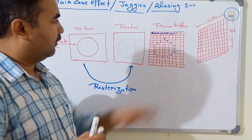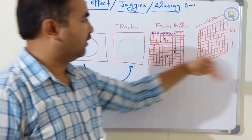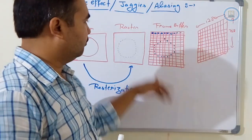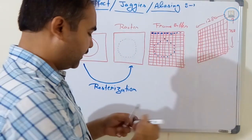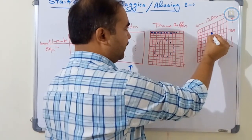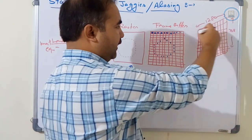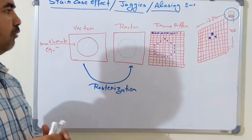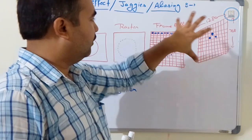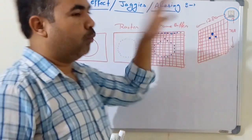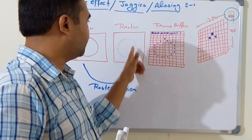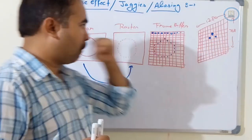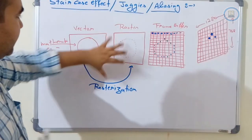When the electron gun scans the display device from left to right and top to bottom, it finds the stored ones in the frame buffer and glows the respective pixels on the screen. In this way, images are displayed one by one. The complete frame buffer is treated as one image.